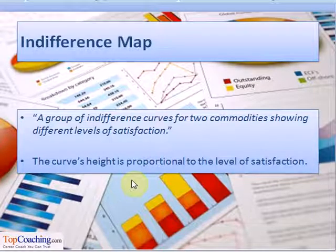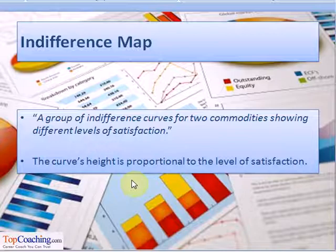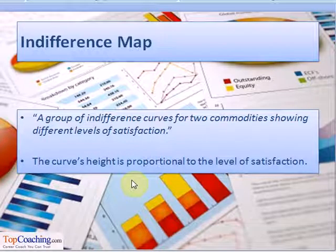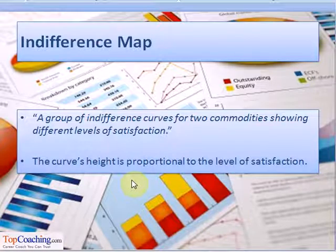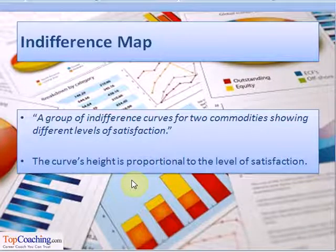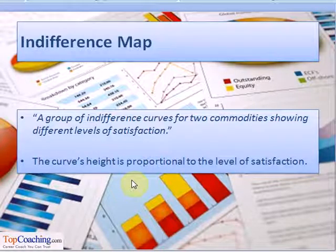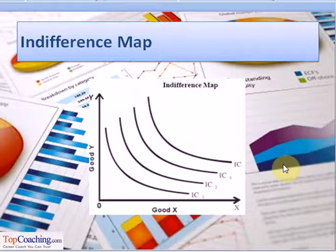Another related term is the indifference map. An indifference map is a group of indifference curves for two commodities showing different levels of satisfaction. It should be clearly understood that a higher indifference curve denotes a higher level of satisfaction, and a lower indifference curve represents a lower level of satisfaction. Thus, the curve's height is proportional to the level of satisfaction of the consumer.